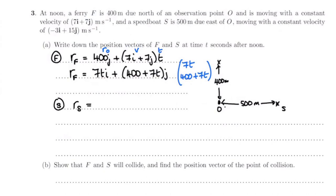So rS: its initial position vector is 500i, plus its velocity minus 3i plus 15j times t. Again we can simplify that slightly because we usually put the i's first. So this is going to be 500 minus 3t times i plus 15t times j, or as a column vector: (500 - 3t, 15t). Completely up to how you write it.